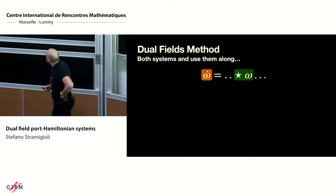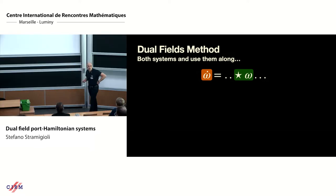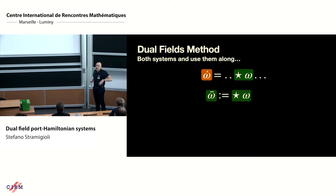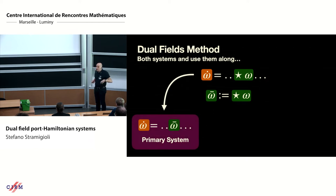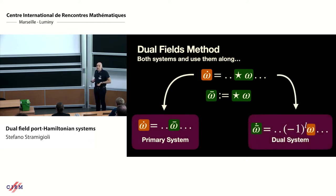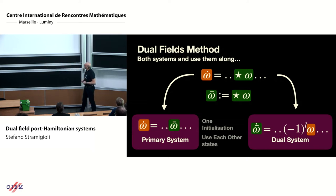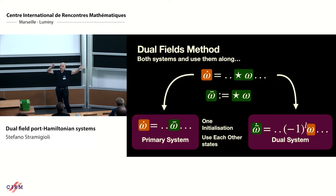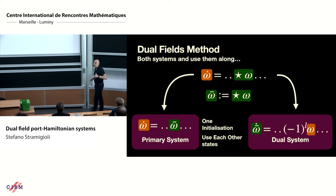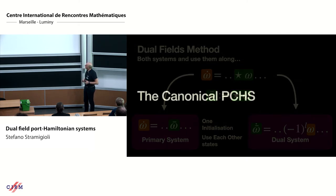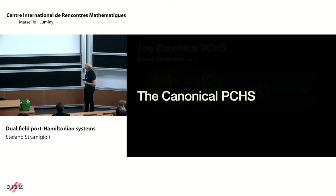The main idea is simple. Suppose you have an equation with an appearance of the Hodge star ω. You define ω̄ as your Hodge star ω, then define a primary system and a dual system. Considering them simultaneously gives a redundant representation. You initialize in continuous time and then use each other's states in a crossed way, integrating the two systems so you never have to use the Hodge operator in discretization.